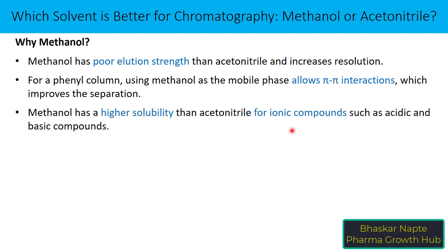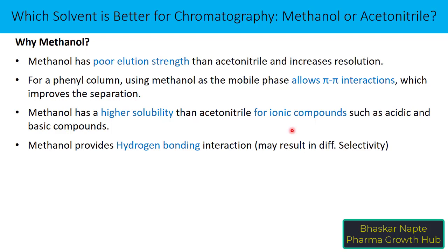Methanol has higher solubility than acetonitrile for ionic compounds such as acidic and basic compounds. This is helpful when using high-salt mobile phases — precipitation may occur in the presence of acetonitrile with buffer salts, but may not occur with methanol. Additionally, methanol provides hydrogen bonding interaction because it is a protic solvent, and this can result in different selectivity compared to acetonitrile.